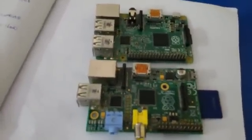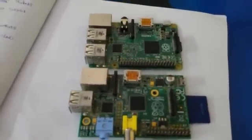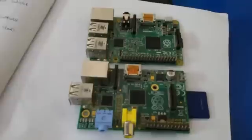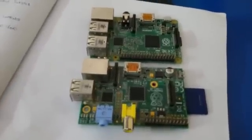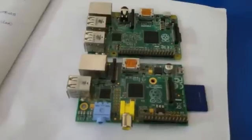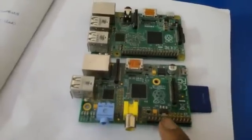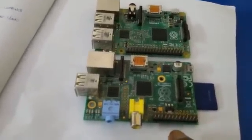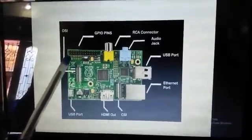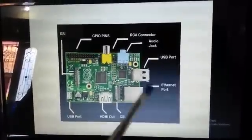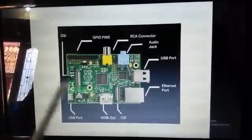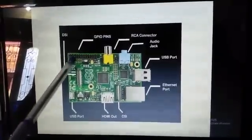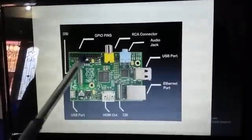If you compare them, what is the difference? Model A has limited GPIO. Model B Plus has more. Now we use Raspberry Pi — this is Raspberry Pi. This is a total overview. If you compare, there are first pins: GPIO pins.